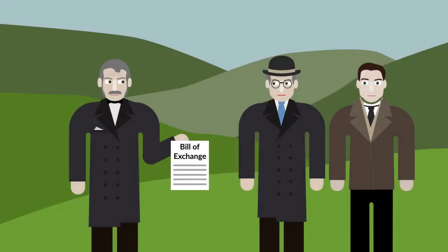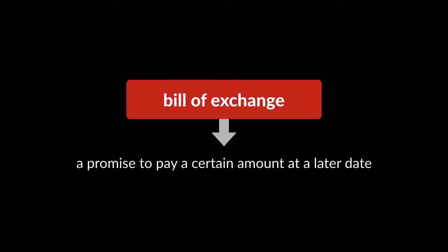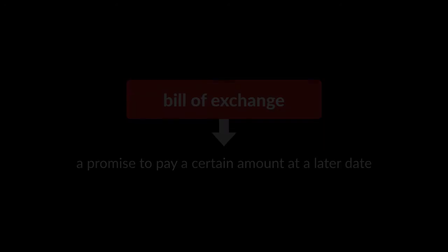George Tyson, a New York resident, bought land from Nathaniel Norton and Jairus Keith. Tyson paid for the land with a bill of exchange. A bill of exchange is similar to a promissory note — it's a promise to pay a certain amount at a later date.